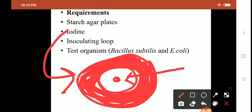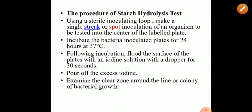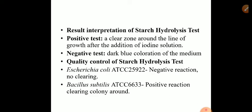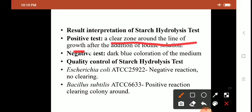This clear zone is called the zone of starch hydrolysis. After inoculation, incubation, and after pouring iodine, if you see a clear zone of starch hydrolysis surrounding the colony which is colorless, you say that organism is amylase producing. If the colony is not surrounded by any clear zone, then the organism is amylase negative or amylase non-producing. Result interpretation: positive means a clear zone around the line of growth or spot inoculation; negative means dark blue coloration of the medium.